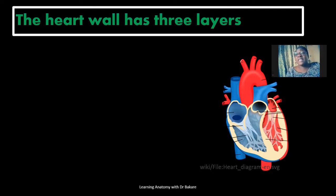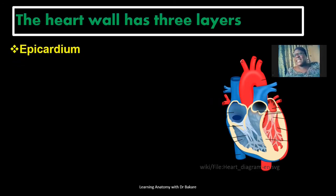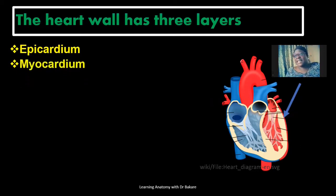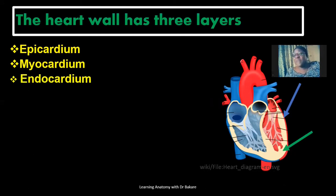The wall of the heart is structurally divided into three sub-layers. We have the epicardium, which is the most external region of the heart. Deep to the epicardium, we have the myocardial layer — this is the myocardium. It is the thickest layer of the heart. The internal lining of the heart, which is deep to the myocardium, is the endocardium.